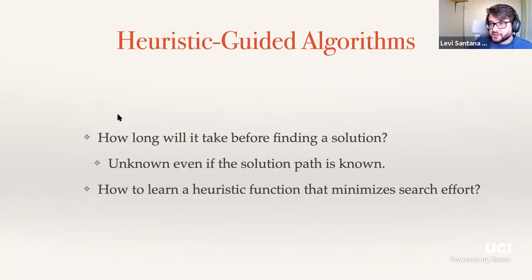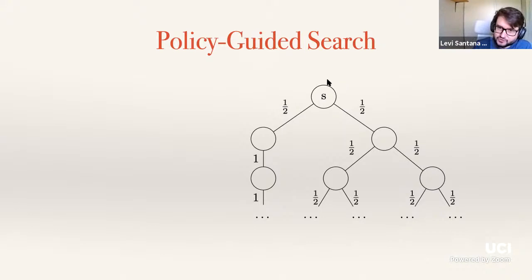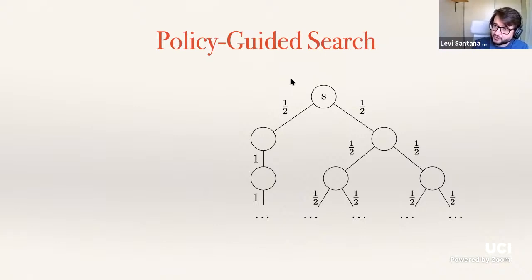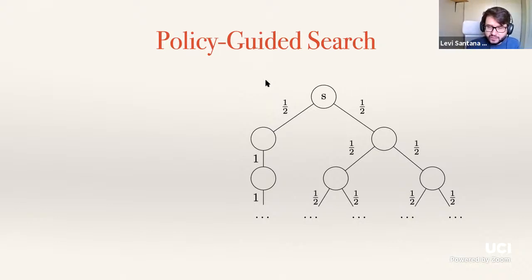Policy-guided search. Instead of using a heuristic — the cost-to-go — we use a policy. A policy is a probability distribution over the actions available to your agent at a given state of the planning problem. Starting at state S at the root of the search tree, the policy might say: with 50% probability take the left action, with 50% probability take the right action. The first question is how can we use this to guide a search algorithm like A*? A naive approach would be to use the probability along the path.